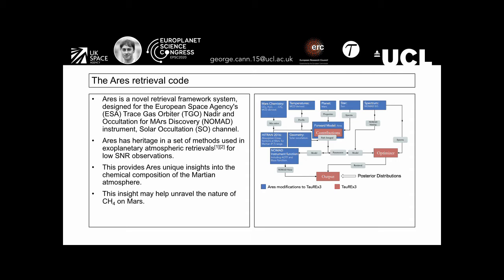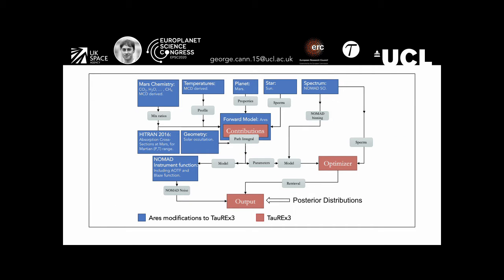These methods also allow us to determine correlations between atmospheric parameters. The diagram on the right shows a flow diagram of the ARIES model, with blue boxes highlighting ARIES modifications to TAREX 3, and the red and grey boxes show TAREX 3 components. Here's a zoomed-in image of that diagram. Here we can see Mars chemistry, temperature, planet, star, absorption cross-sections, and geometry modules are fed into the forward model.